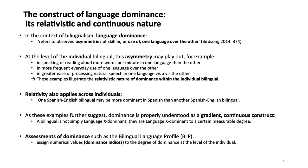Dominance refers to asymmetries of skill in or use of one language over the other. At the level of the individual bilingual, this asymmetry can play out in speaking or reading more words per minute than the other, more frequent everyday use of one language over the other, and ease of processing in one language vis-à-vis the other. Relativity also applies across individuals.